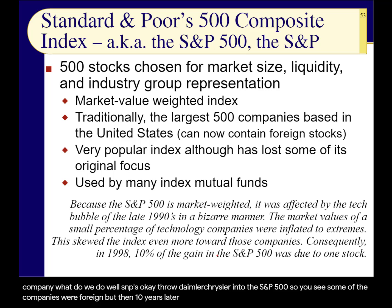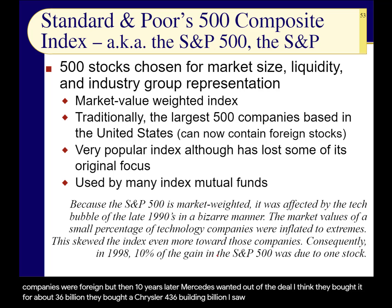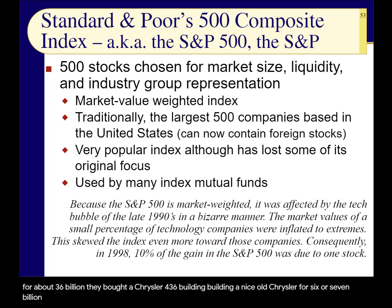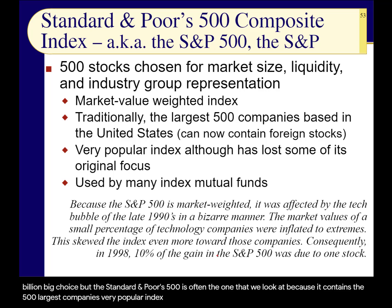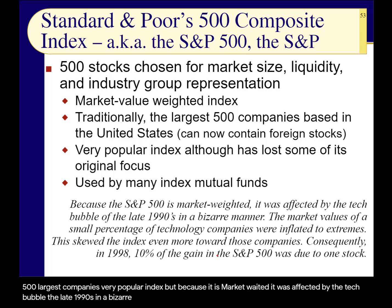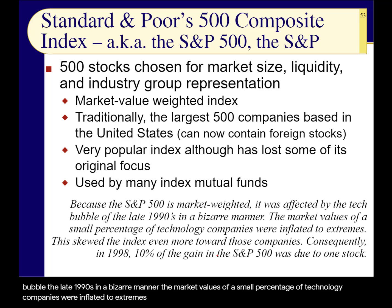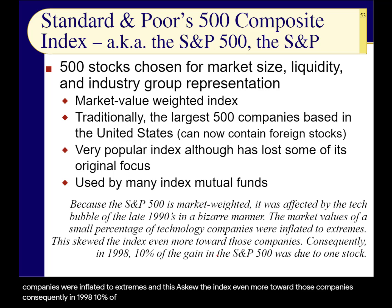The Standard & Poor's 500 is often the one we look at because it contains the 500 largest companies — a very popular index. But because it is market-weighted, it was affected by the tech bubble of the late 1990s in a bizarre manner. The market values of a small percentage of technology companies were inflated to extremes, skewing the index even more toward those companies. Consequently, in 1998, 10% of the gain in the S&P 500 was due to just one stock — Microsoft.